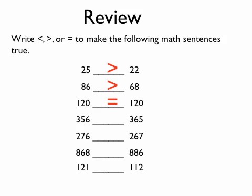356 and 365 look very similar. Both have three hundreds. But on closer examination, the number 356 has five tens, and the number 365 has six tens. Five tens is less than six tens, so we must use the less than symbol. 356 is less than 365.